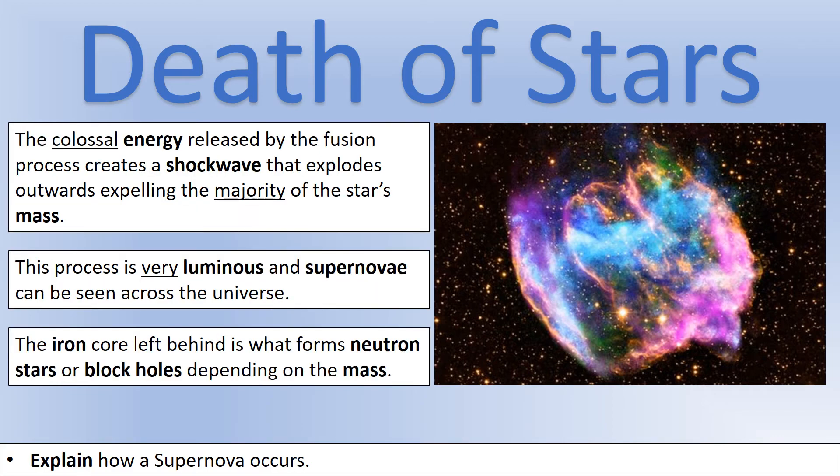So this process releases a massive, massive, massive amount of energy. So that creates something called a shock wave that explodes outwards, and that's what we call a supernova. And a star actually expels the majority of its mass during this phase. There's a massive amount of mass ejected into outer space. And this mass goes on to become other stars, other galaxies, planets, comets, you name it. It comes from a supernova. So this process releases a massive amount of energy, so it's very luminous, because luminosity is essentially the rate of power of light energy. So emitting a large amount of energy means you're very luminous and bright. And we can actually see supernovae right across the universe. They're very bright compared to other stars. So the iron core left behind is what forms either a neutron star or a black hole.